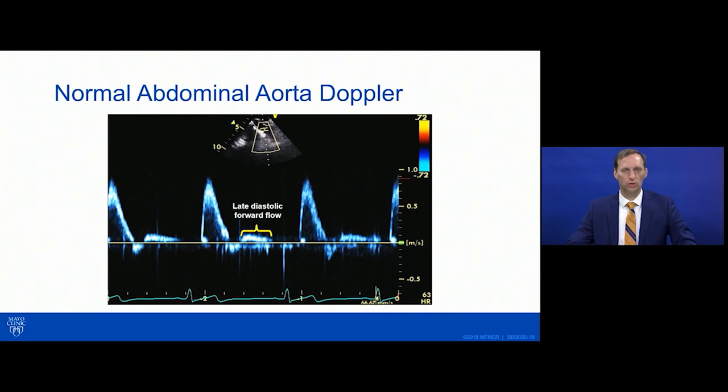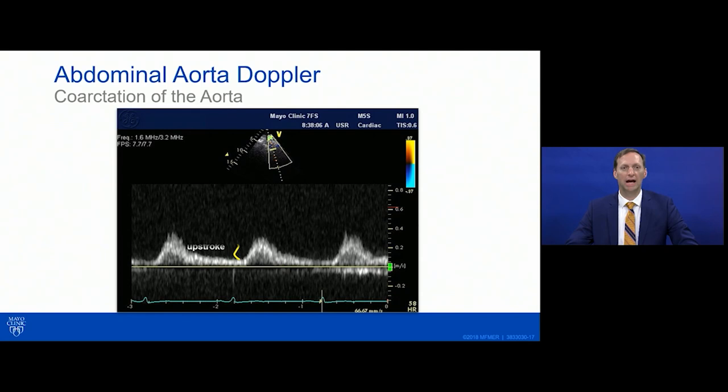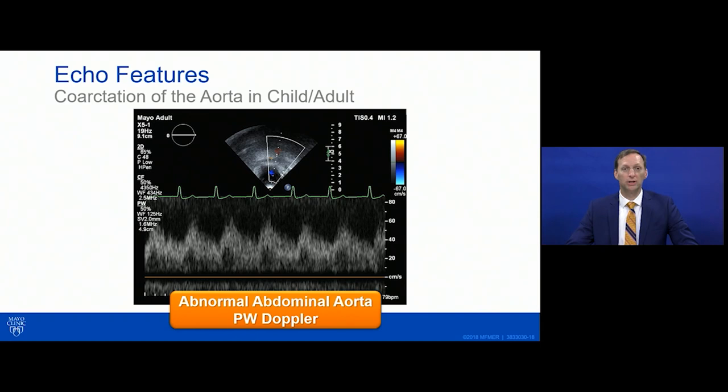By comparison, the abnormal signal shows a slow upstroke, a gradual slow downstroke, and continuous forward flow with absence of diastolic reversals. Unless proven otherwise, you have to consider this to be coarctation of the aorta. The lack of diastolic reversal is a hallmark for coarctation, even if the paper speed makes the slow upstroke harder to appreciate.